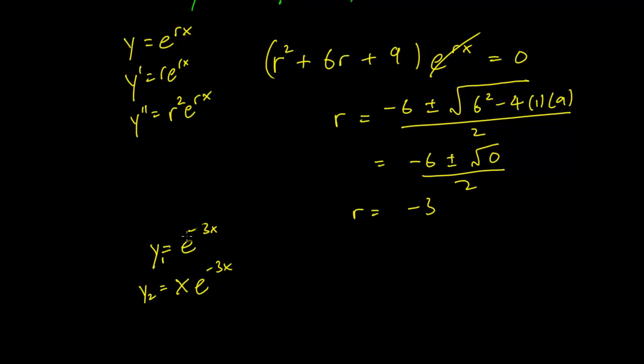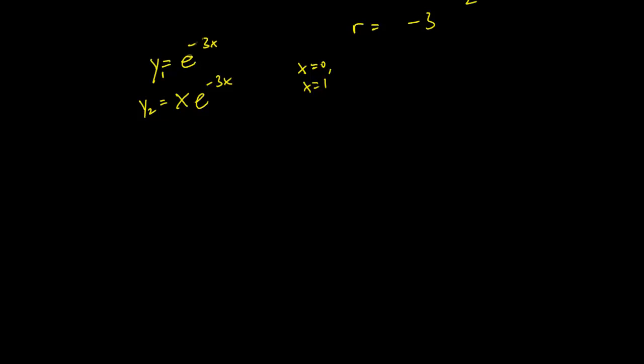Now first of all, we can check that these two solutions are linearly independent. And there are several ways you can do that. I would suggest looking at x equals 0 and looking at, say, x equals 1. And from there you can see that it is going to be linearly independent. But this is left as an exercise for you to work out.